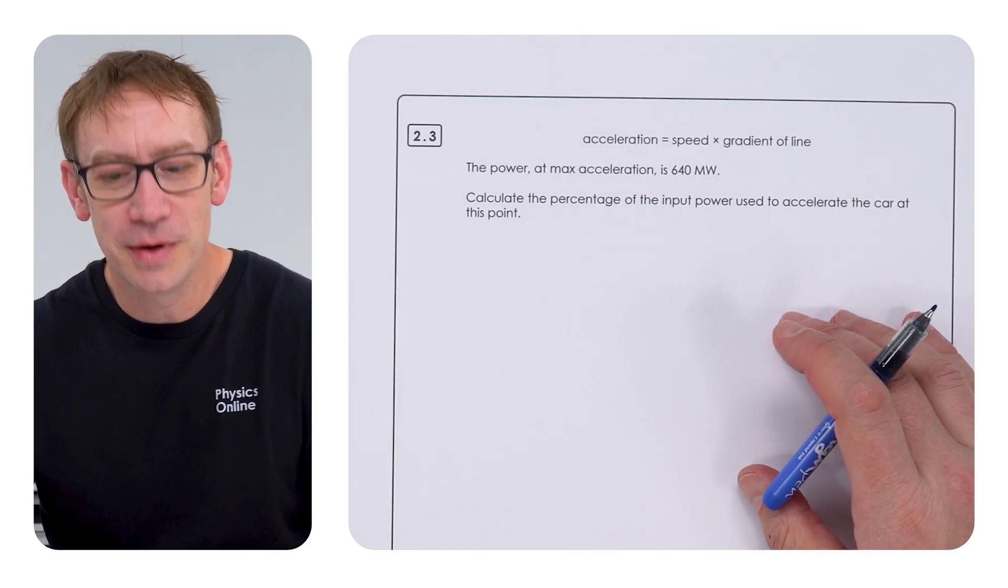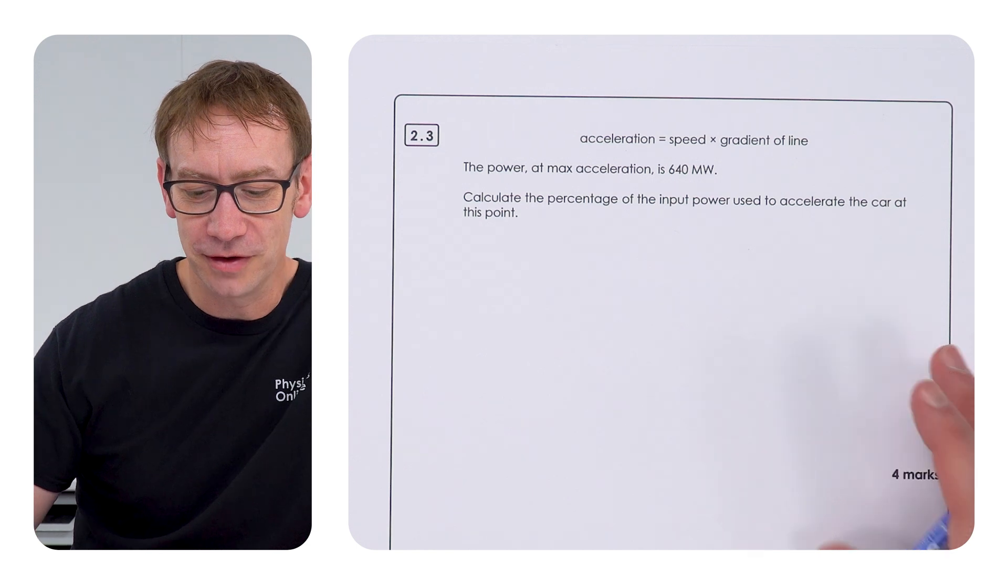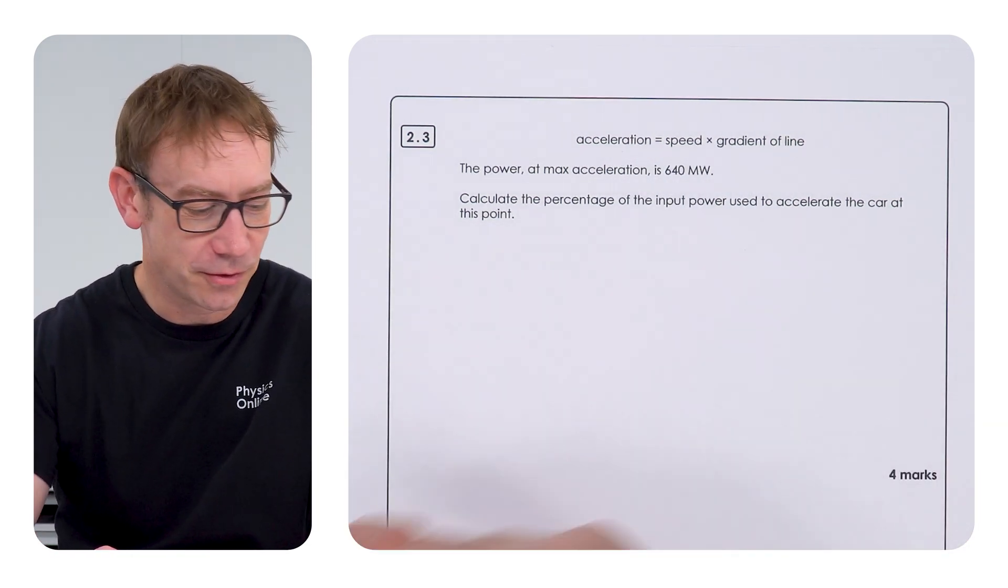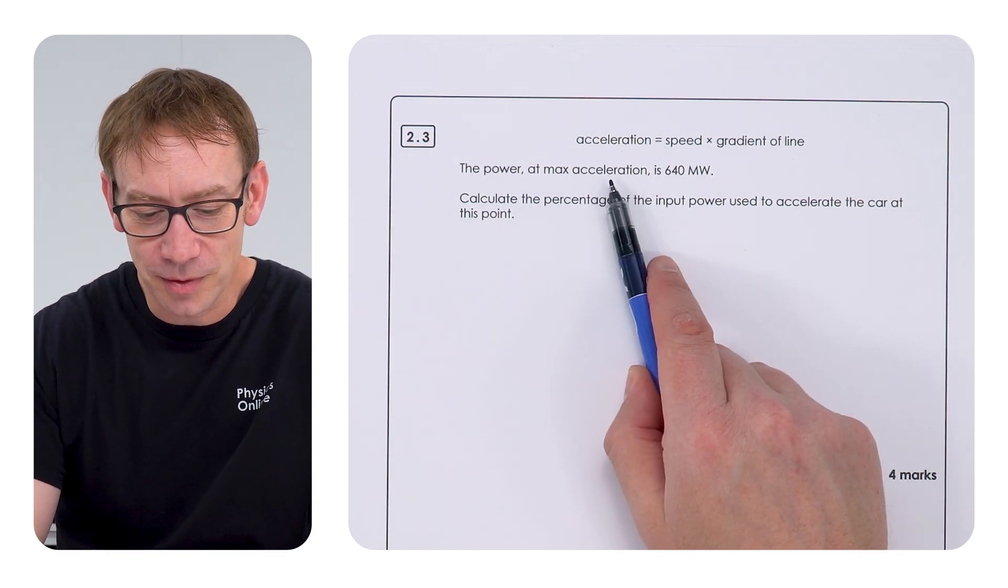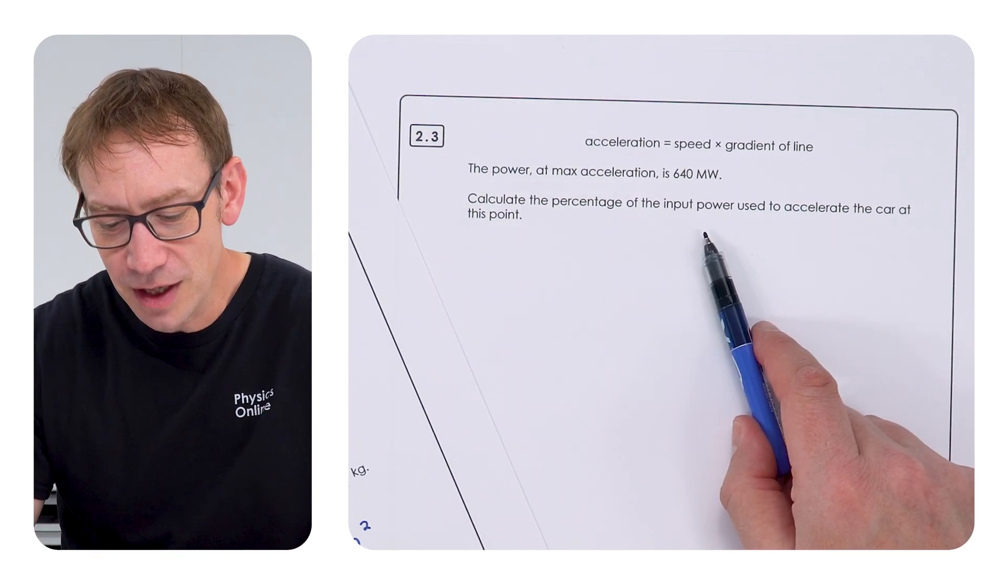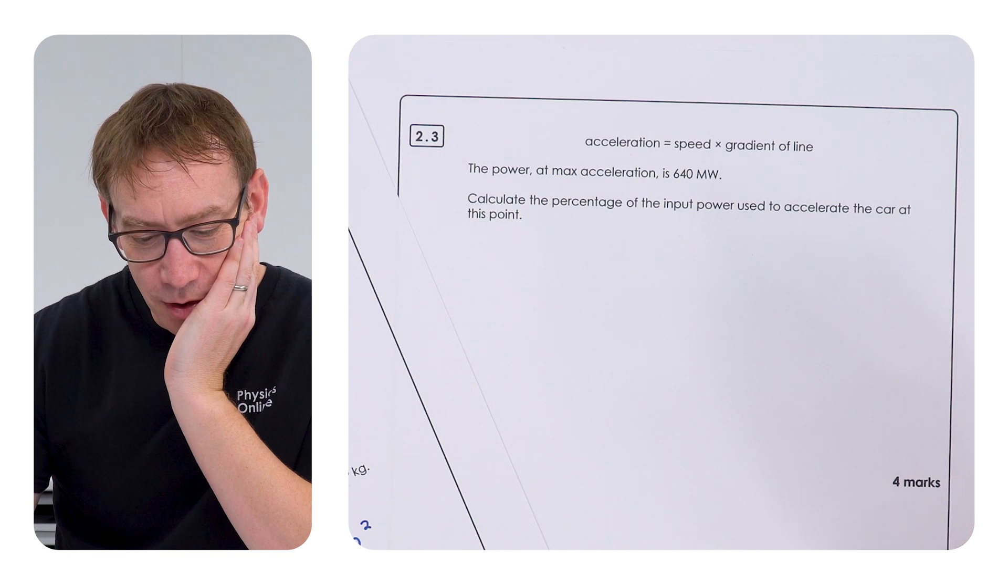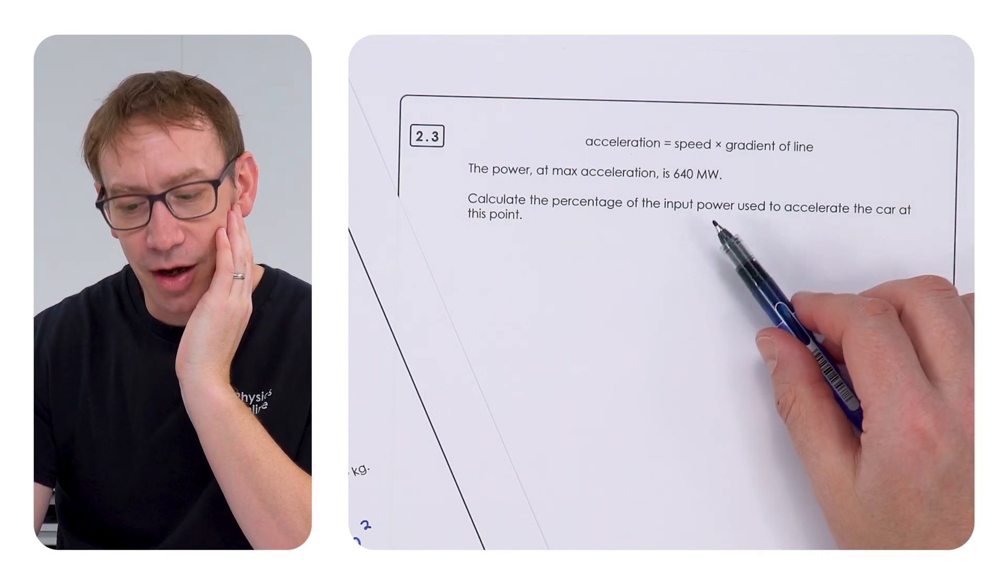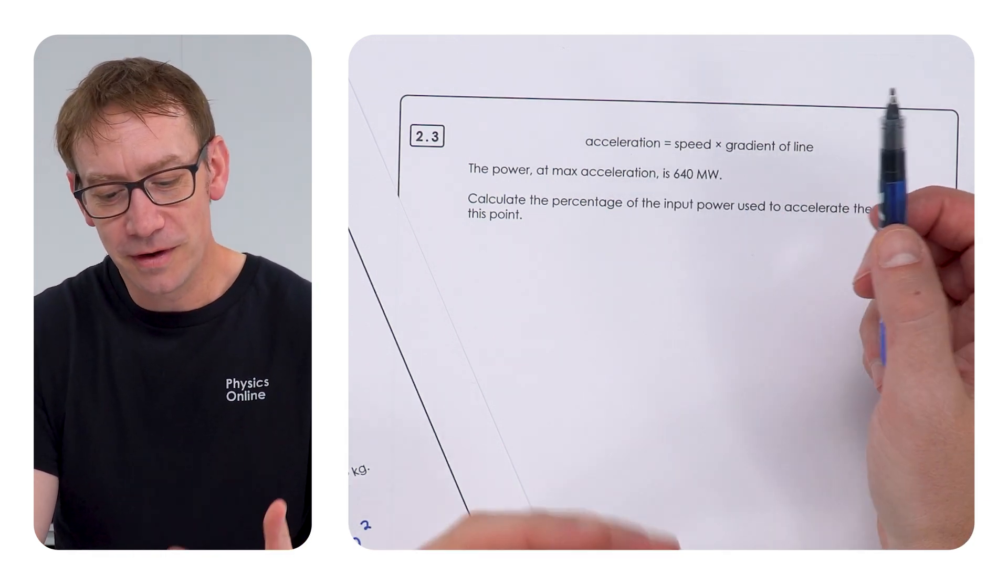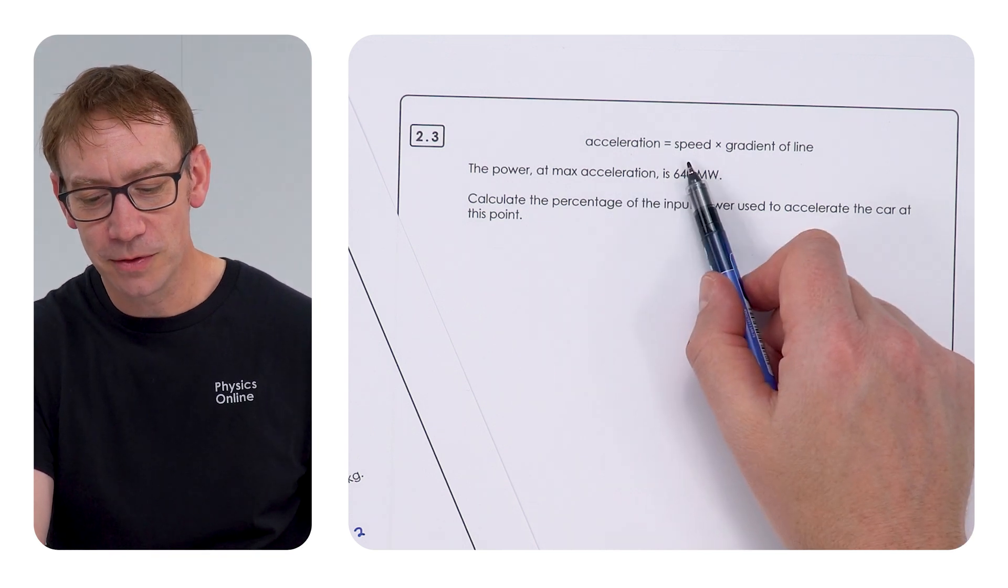This is something that very few people actually managed to get four marks. I think less than half the people got all four marks for this. So we've got a new equation that just says the acceleration is equal to the speed times the gradient of the line. We've got a power at the maximum acceleration, which we know is at 5,600 metres. And we need to calculate the percentage of the input power used to accelerate the car at this point. So, we need to think about an equation to work out power, but also there's something to do with acceleration. So I reckon my first step would be to maybe just look at the acceleration of the car at its maximum acceleration. That's going to be equal to its speed times the gradient.